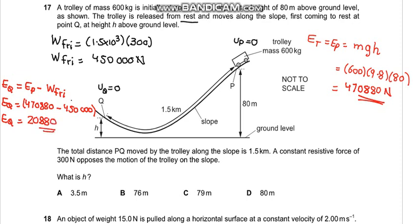And it's given in the question that at Q the velocity is 0, it is at rest. So we can write that 20,880 is equal to mgh which is 600 into 9.8 into H which we have to find. So the value of H becomes 20,880 divided by 600 divided by 9.8 which becomes 3.5 meters. So A is the correct answer.